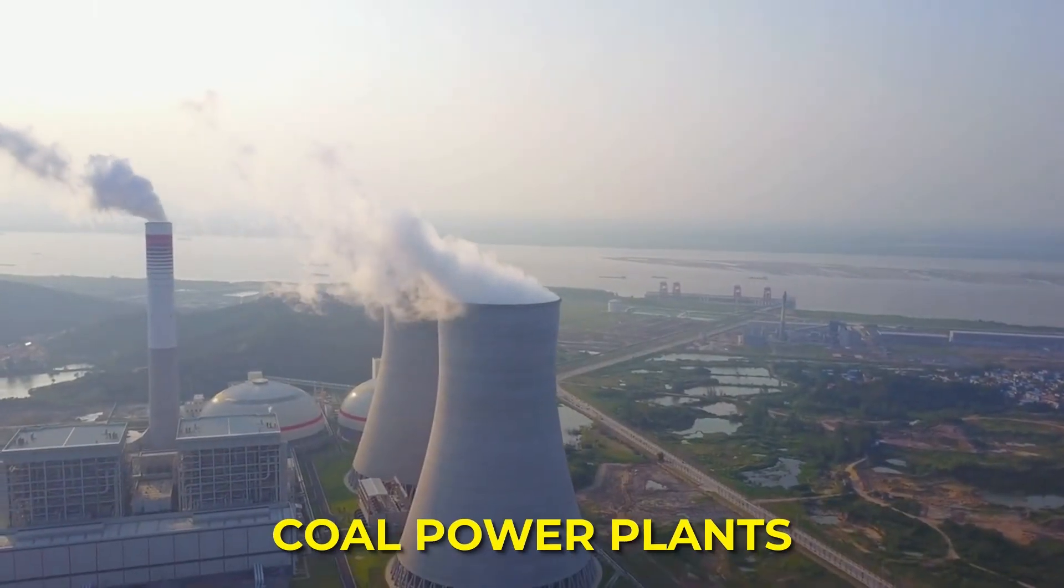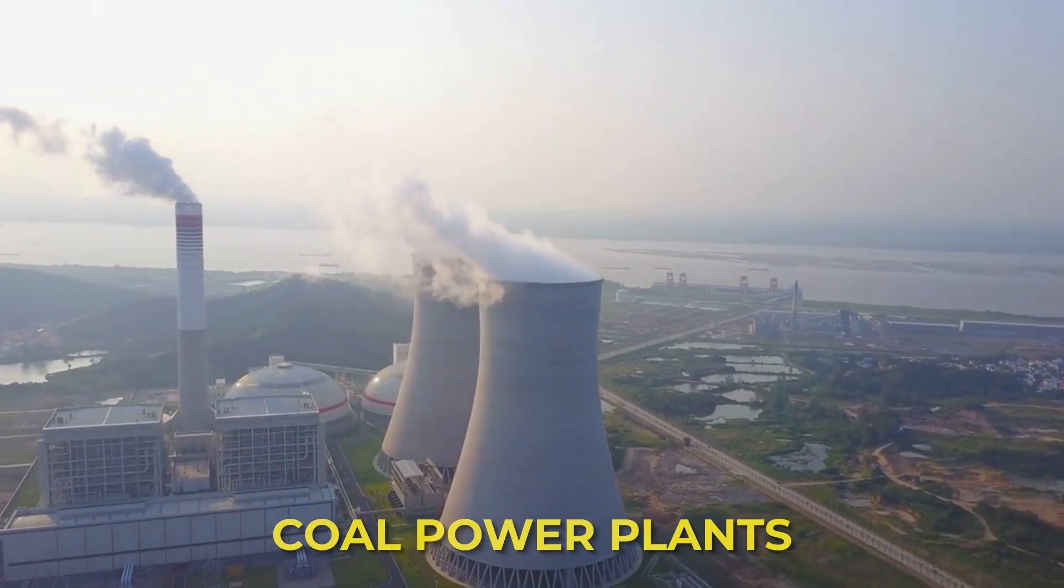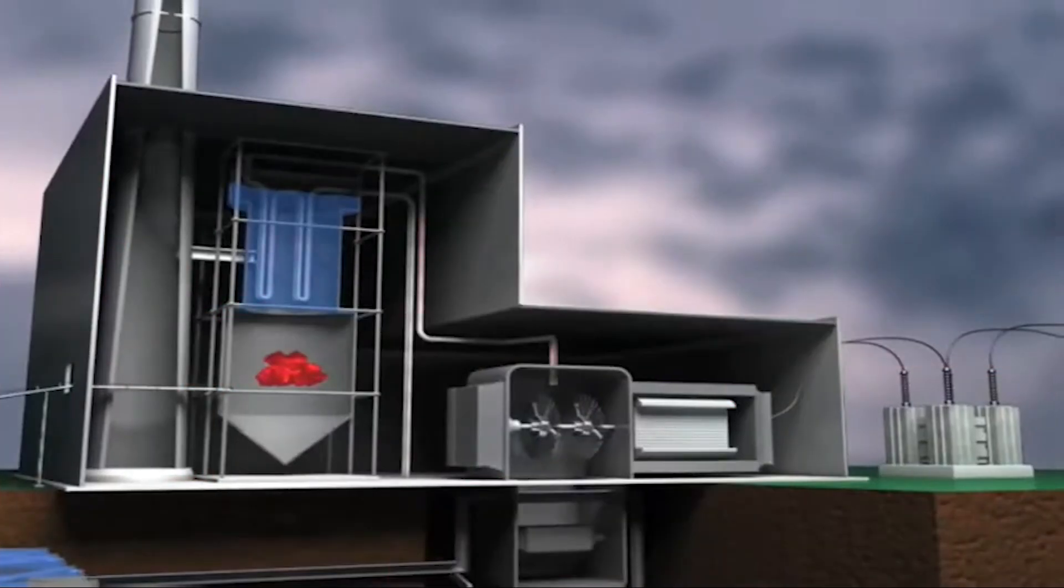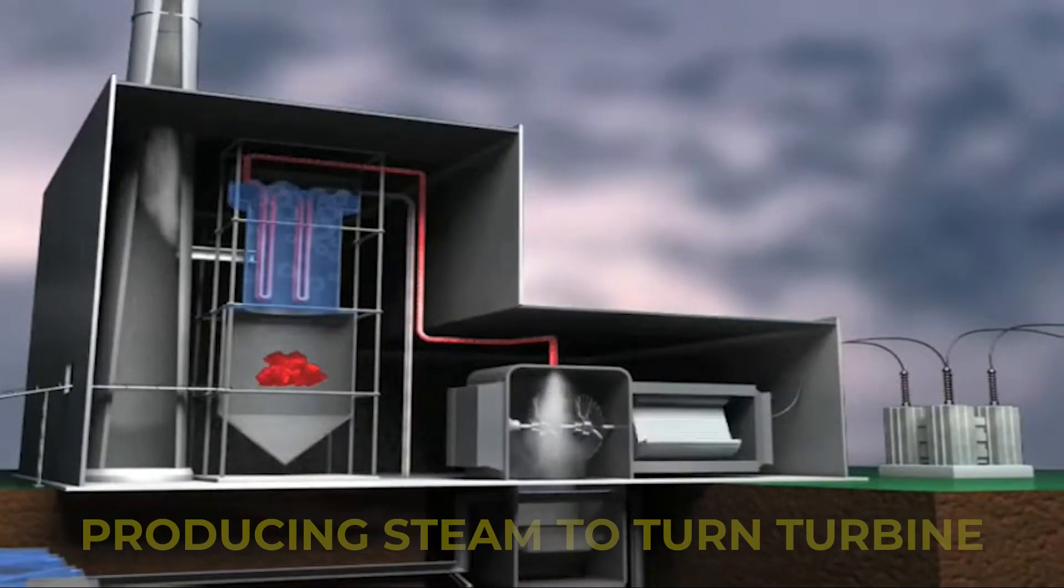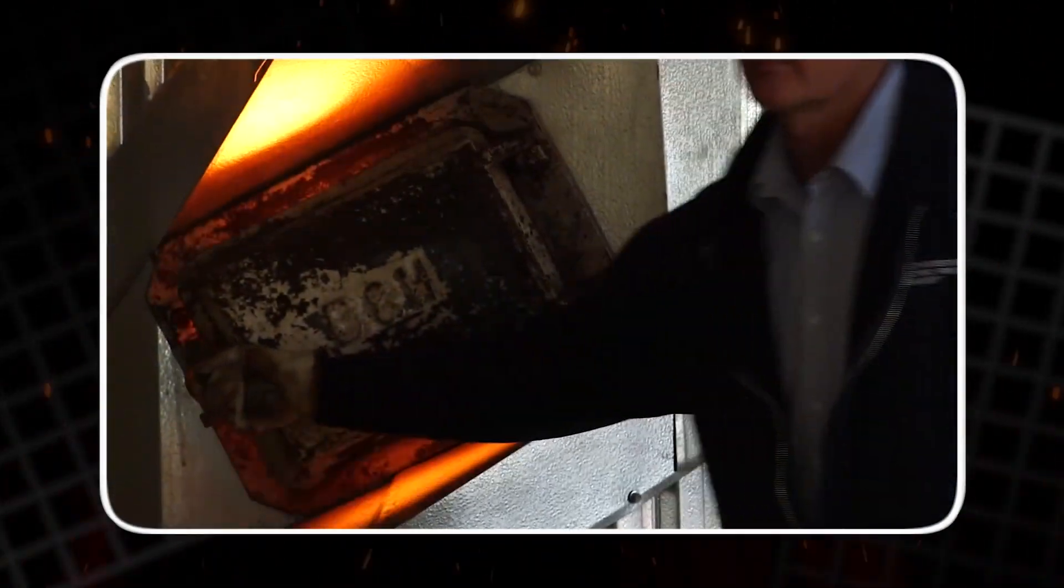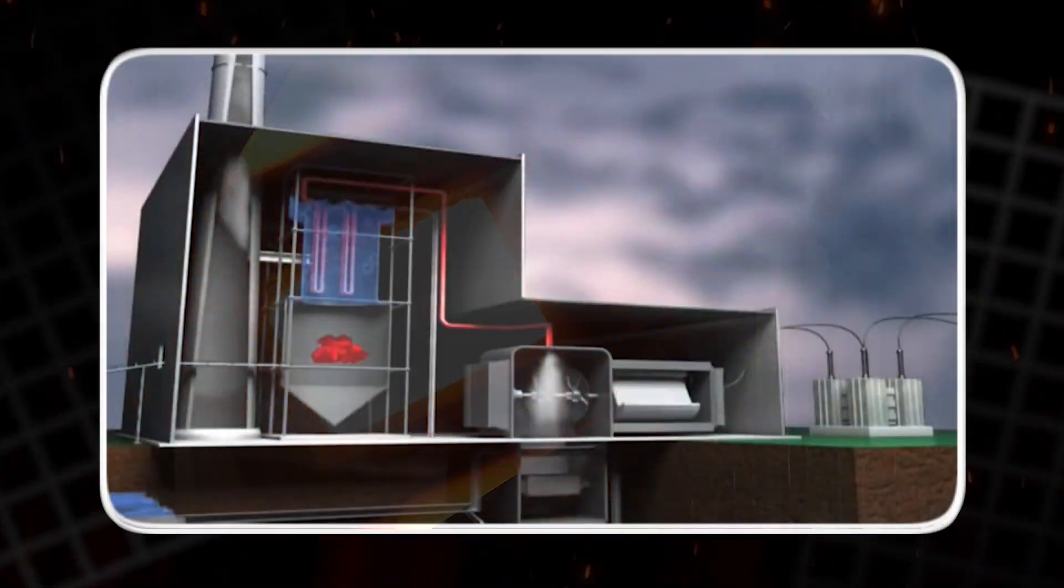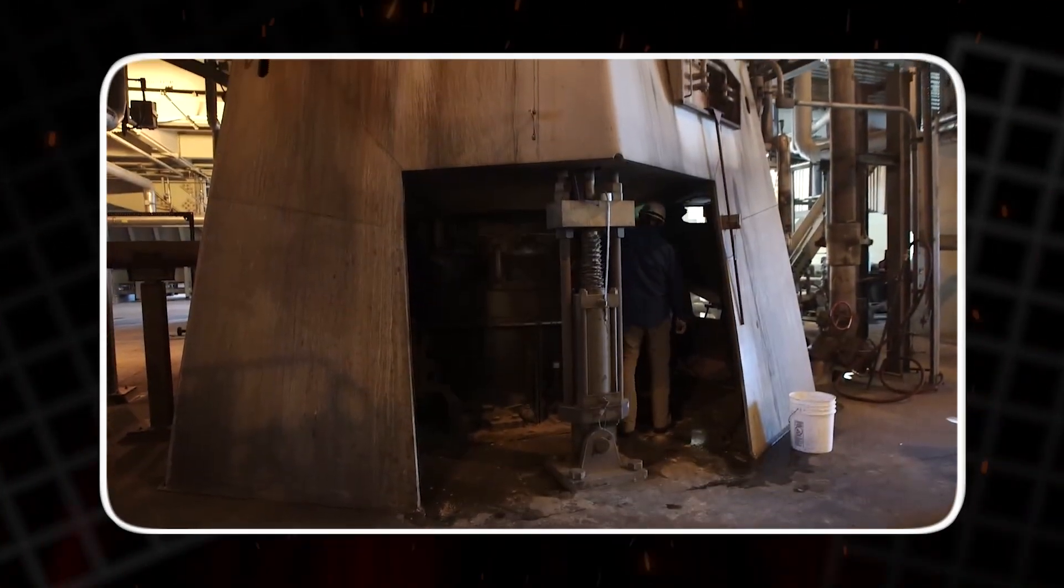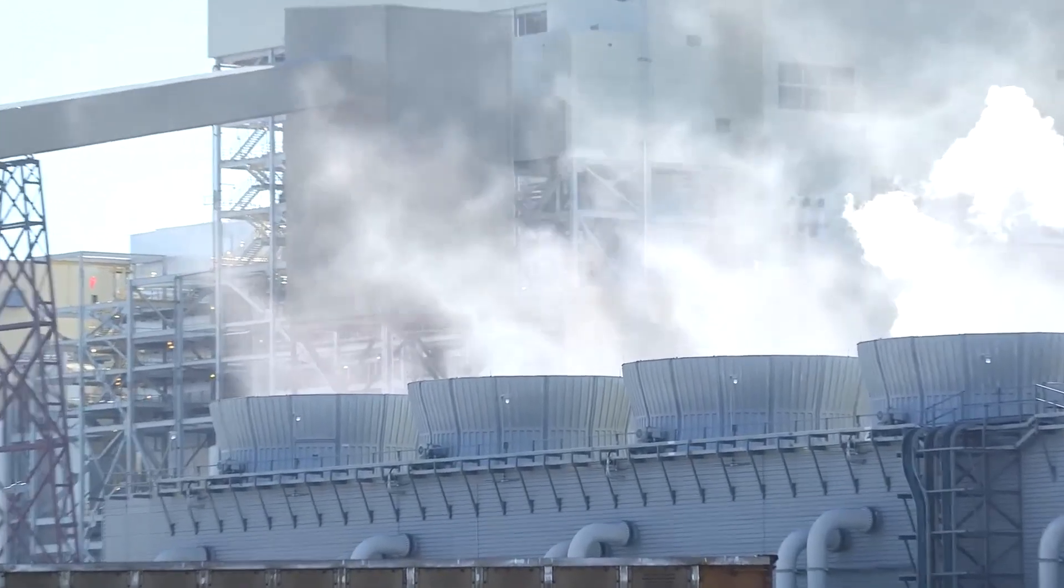By comparison, coal power plants are far less efficient. They can't inject coal directly into turbines. Instead, coal must be burned in a furnace to heat water, producing steam to turn a turbine. Even the most advanced, supercritical coal plants, which operate at extremely high temperatures and pressures, reach around 45% to 50% efficiency. Some designs use multiple turbines or reheating stages to recover additional energy, but they still lag far behind combined cycle systems.